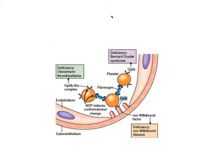If GP1B — the receptor on the platelet surface — is deficient, this will also result in a bleeding tendency. The disease is known as Bernard-Soulier syndrome. This is one of the functional platelet defects. The platelet count may be normal, but the platelet is not functioning properly due to deficiency of GP1B. Without these receptors, platelets cannot achieve proper adhesion with von Willebrand factor, resulting in a bleeding tendency.